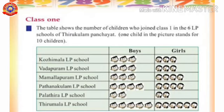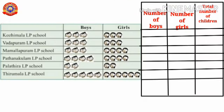Class 1. The table shows the number of children who joined Class 1 in the 6 LP schools of Tirukulam Panjait. Note this: 1 child in the picture stands for 10 children. So in Kodimala LP school, 30 boys and 30 girls are there. The total number of children in Kodimala LP school is 30 plus 30 equals 60.